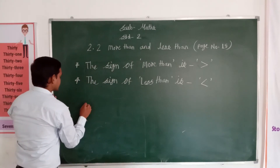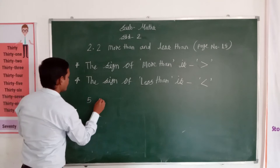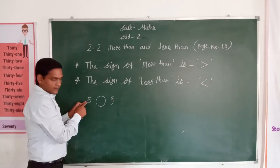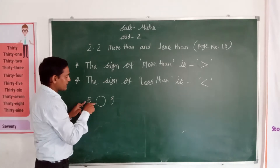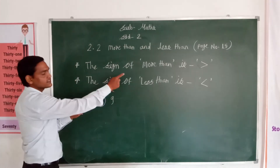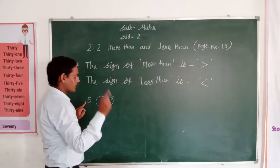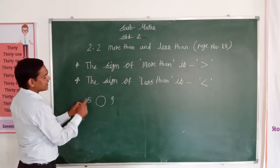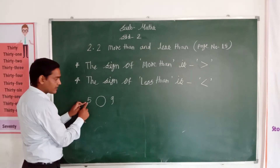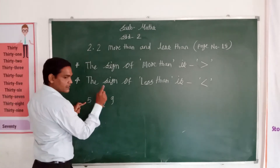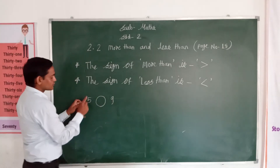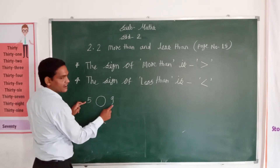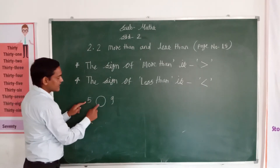Now look here. This is number 5 and this is number 9. Which number is less and which number is more? More means greater and less means smaller. This is the first number and this is the second number. So 5 is less, means smaller. More means greater number. So the first number is the less number — 5 is less than 9.